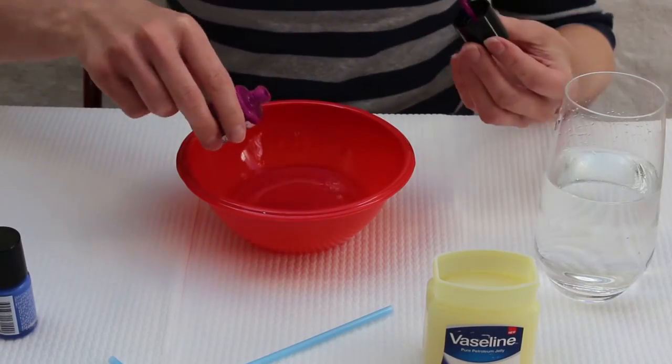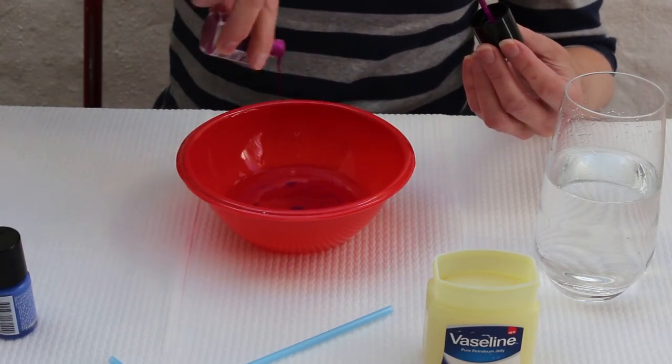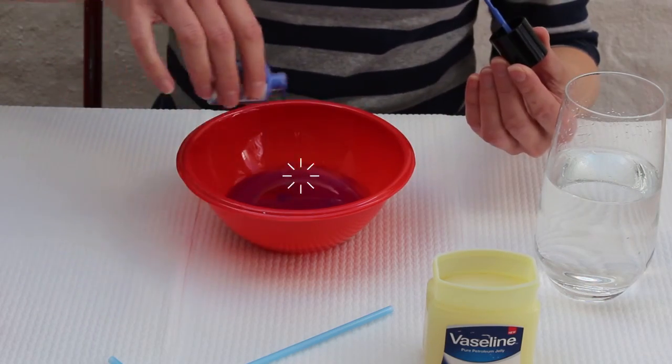Fill a bowl with 100ml of water. Add several of your favourite nail polish colours to the water so they sit on top of the surface.